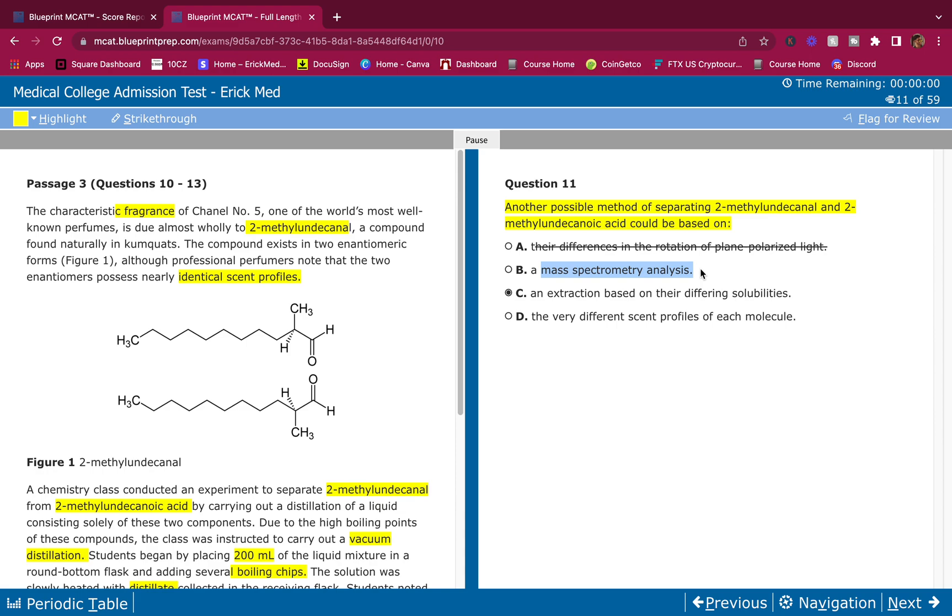An extraction is actually what will separate it. Look at what the question is asking - this is subtle but a lot of you guys get this wrong. The question is asking what method, so you find a method in the answer choices. Options A, B, and D are not methods, they're just telling us information. The method is an extraction. Read the question, hang on to every word in the question. Answer C, and I'm very confident.